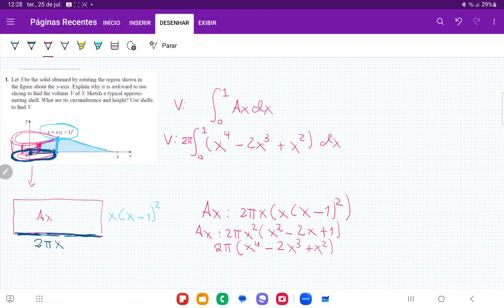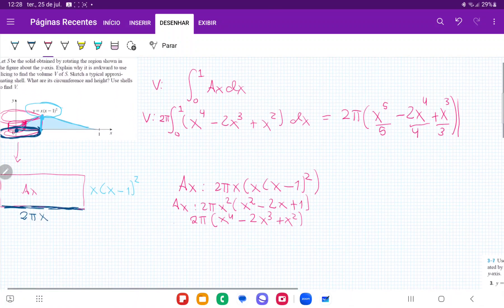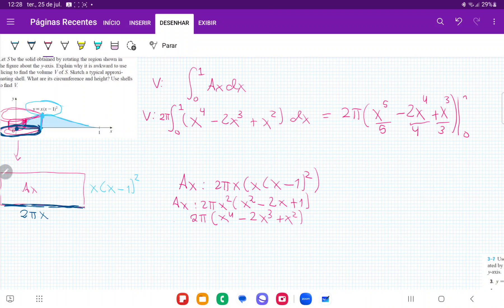So we are ready to integrate this. This is 2π outside, and that is x⁵ over 5 minus 2x⁴ over 4, and then plus x³ over 3, and all of this evaluated, the boundaries are between 0 and 1. So 0 and 1, which is equal to 2π.